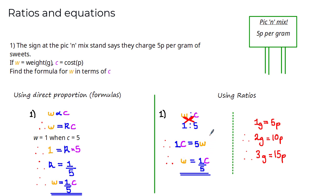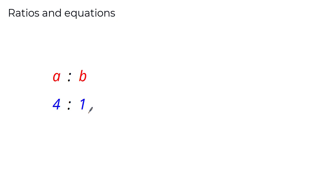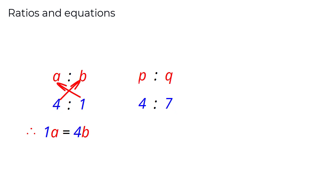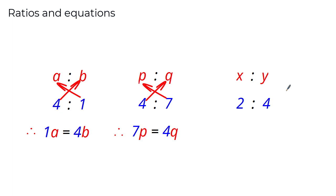Let's look at more examples of converting between ratios and equations. If a:b = 4:1, cross multiplying gives 1 × a = 4 × b. If p:q = 4:7, cross multiplying gives 7p = 4q. And if x:y = 2:4, cross multiplying gives 4x = 2y.